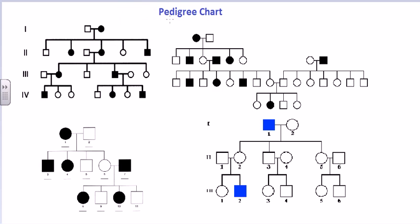Welcome back friends. In this video tutorial we'll be talking about pedigree charts — how to solve them and how to find out a trait by looking at a pedigree chart. Pedigree charts are very important and useful for predicting a disease and the inheritance pattern of the disease. There are four different pedigree charts shown, each representing a type of inheritance pattern that can be possible.